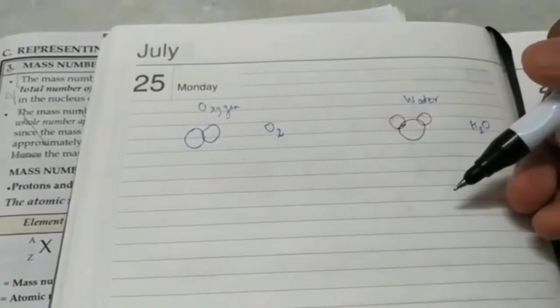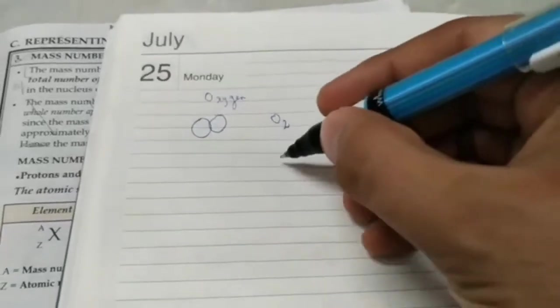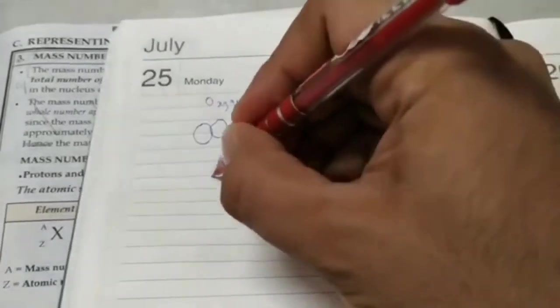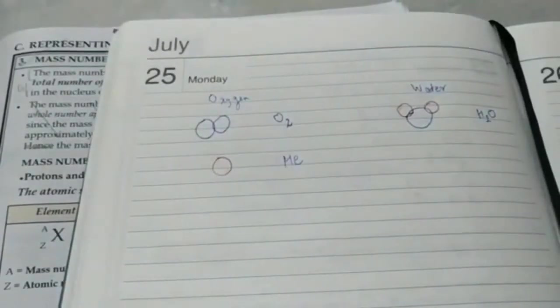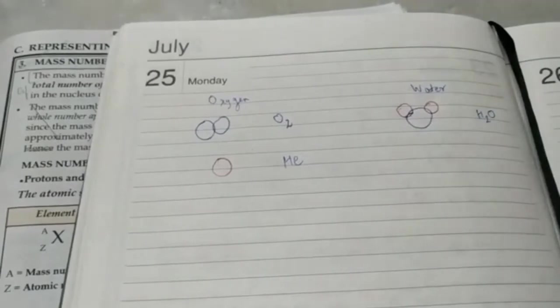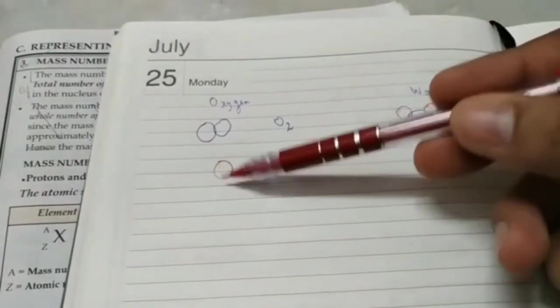But we can even have monoatomic molecules. For example, helium. Helium is made up of just one atom. It doesn't combine with any other atom. It's inert. It's stable. It's a noble gas.